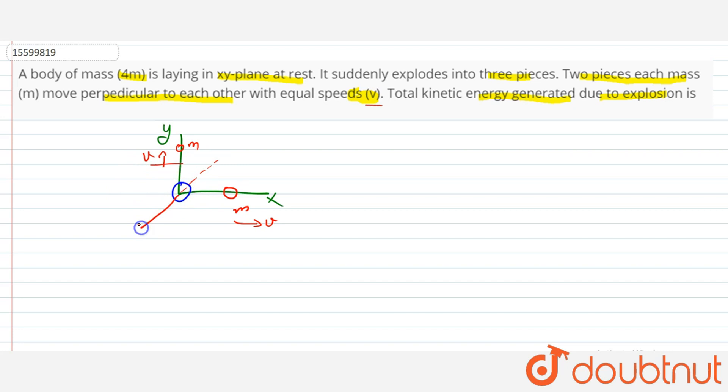So this particle has mass 2m with speed V. By conservation of momentum, we have applied initially momentum is 0 of the system and finally momentum is 0. So mv, mv, and 2m times V gives us the velocity of the third piece.